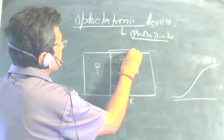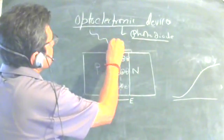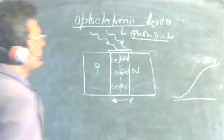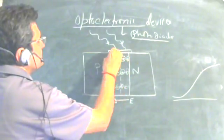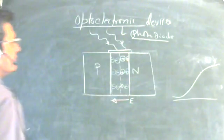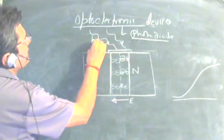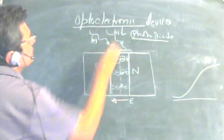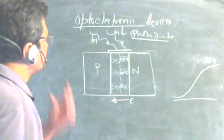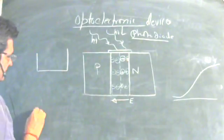In the photodiode, there is a window which allows light — the photons — to strike the depletion region and the area around it. What happens when a photon having energy hν strikes the semiconductor material? In semiconductors we know there is a conduction band and a valence band.